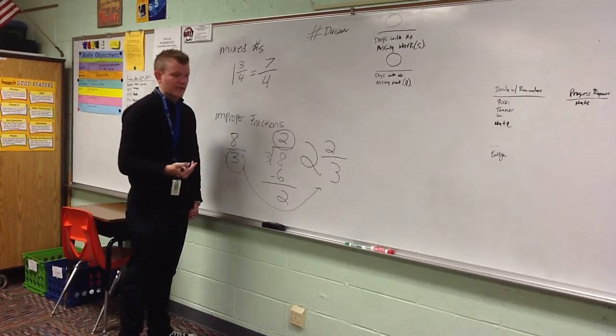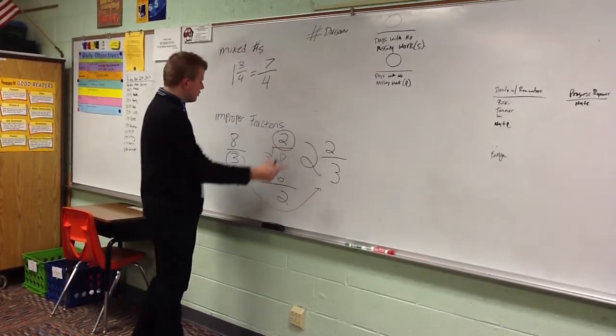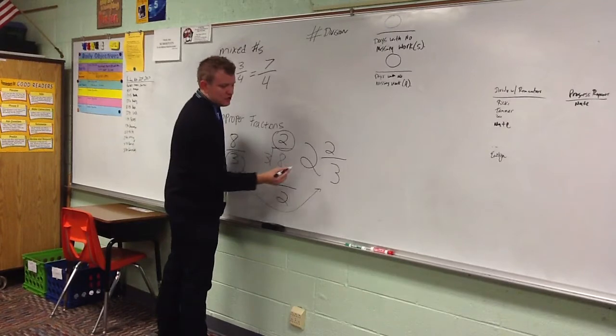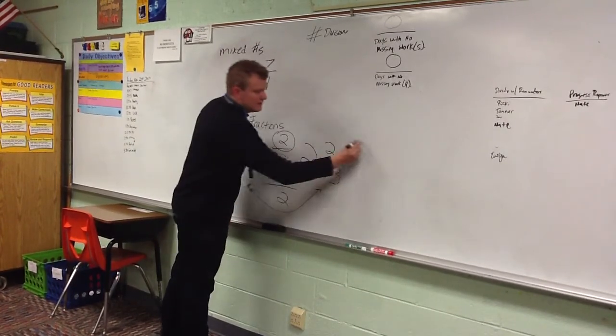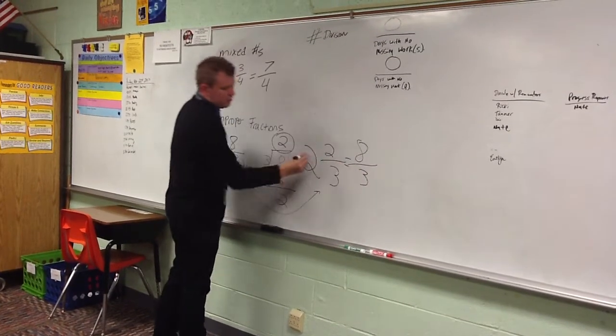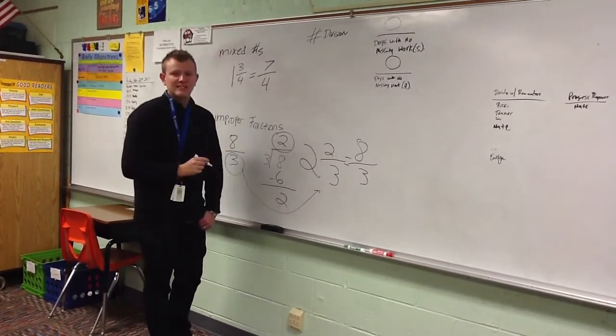Real quick, let's take this two and two thirds and check it. Three times two is six, plus two, eight. The denominator stays the same. Two and two thirds is the same as eight thirds.